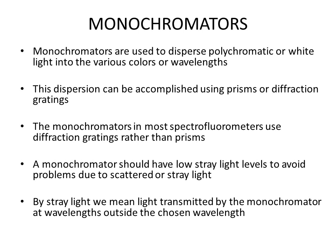This dispersion can be accomplished using prisms or diffraction gratings. To disperse polychromatic light into monochromatic light, we use prisms or diffraction gratings inside monochromators. Most spectrofluorometers use diffraction gratings rather than prisms because diffraction gratings give better results.